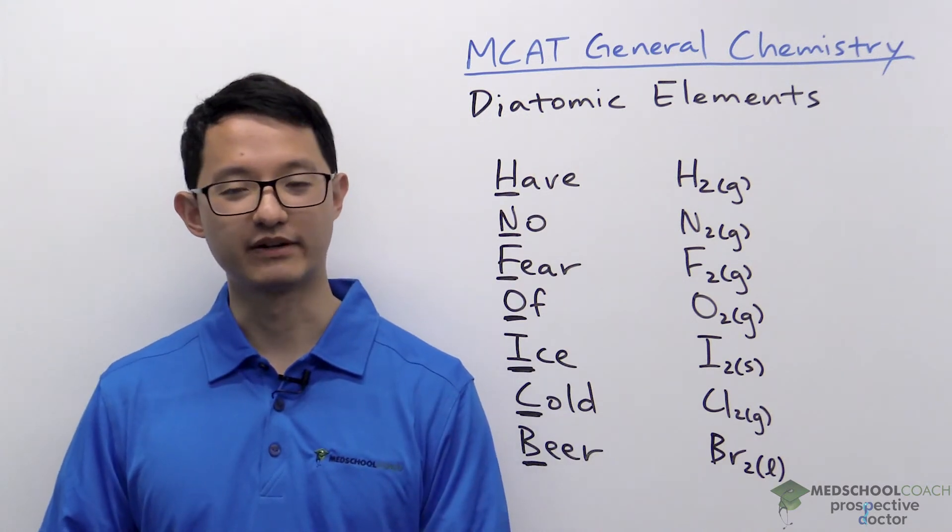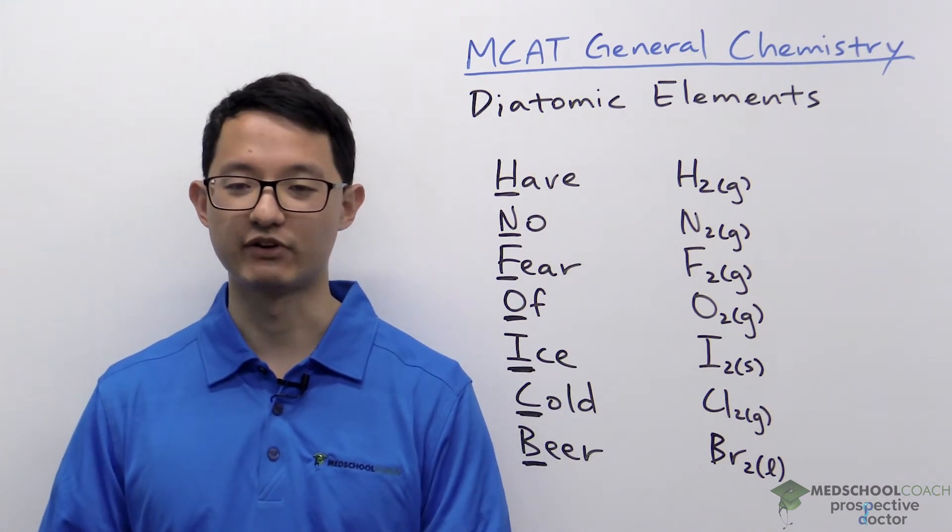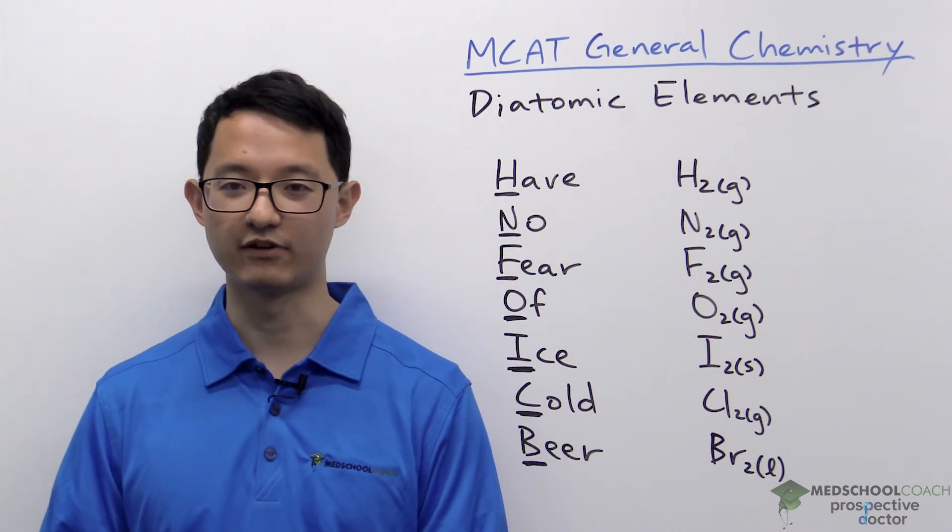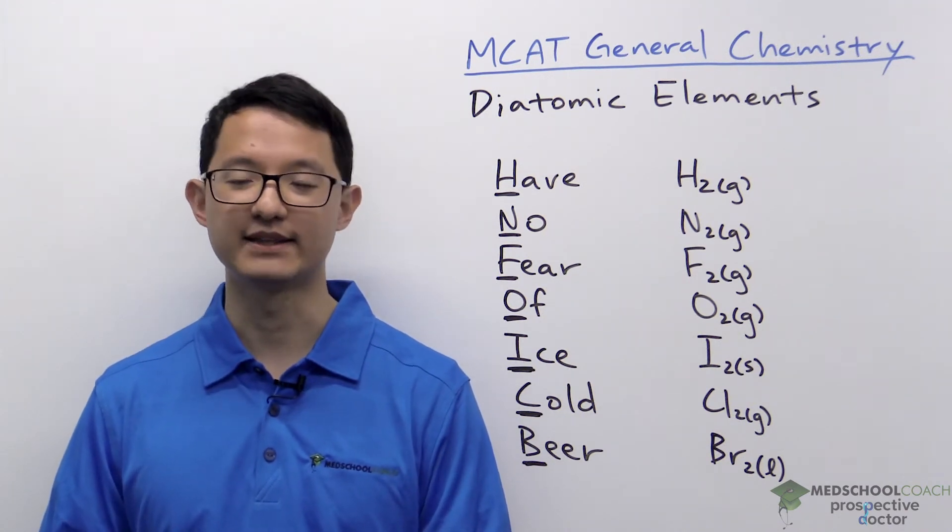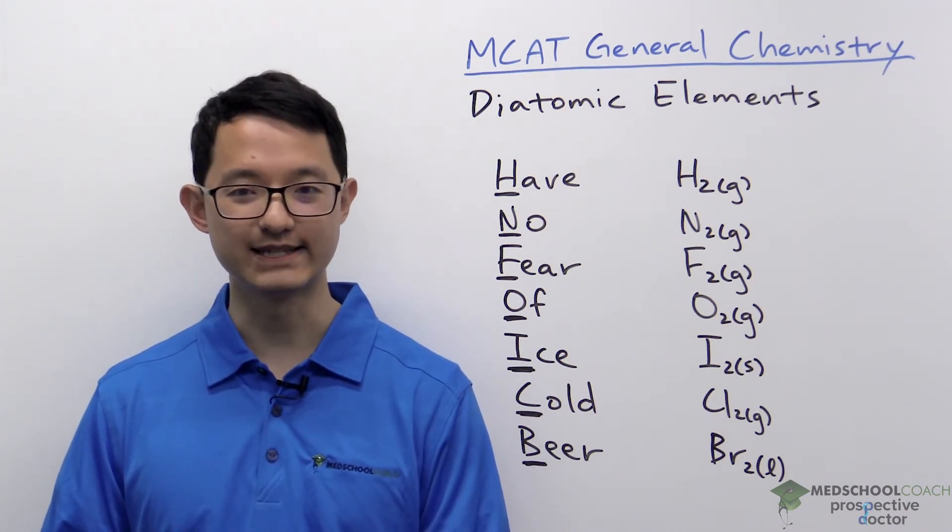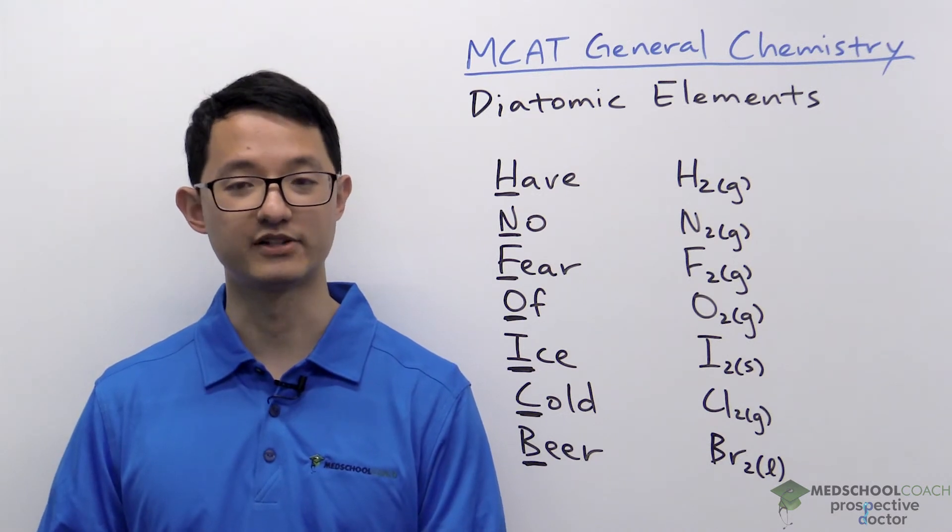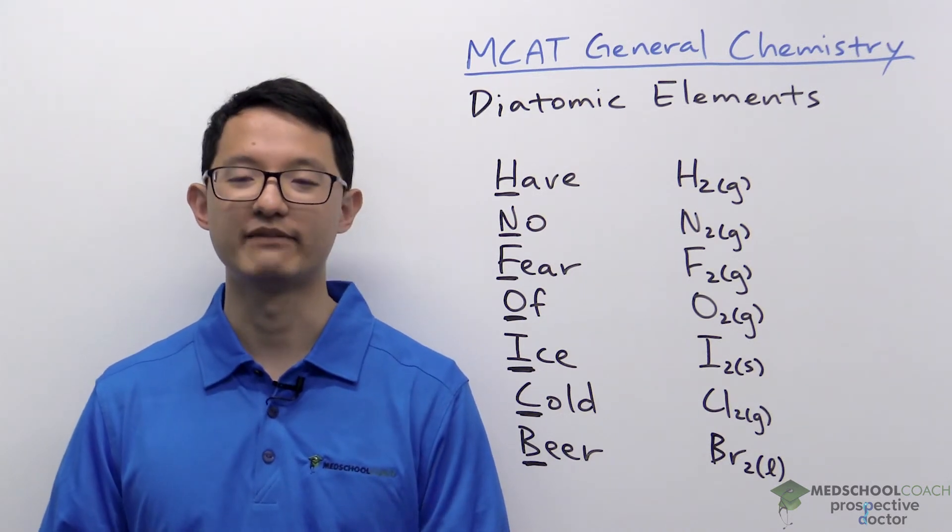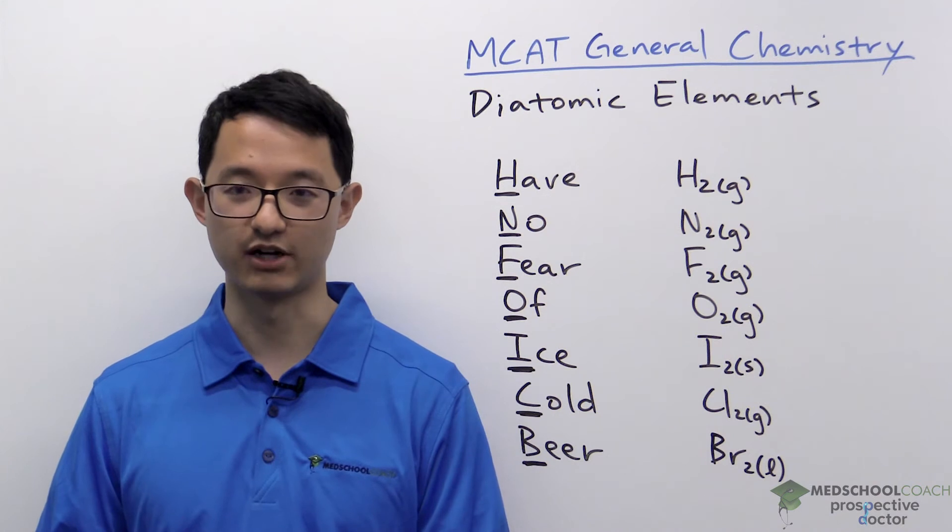These are good to keep in mind because when you're calculating the enthalpy change of a reaction using heats of formation, you want to remember that the diatomic elements exist in their diatomic forms in their standard state and therefore have a heat of formation of zero.